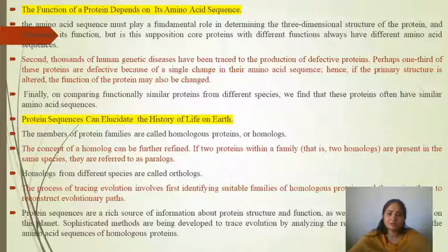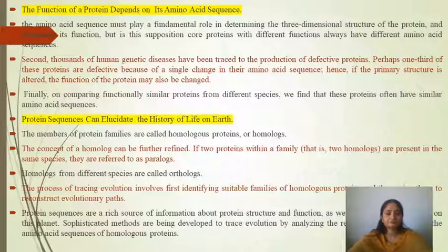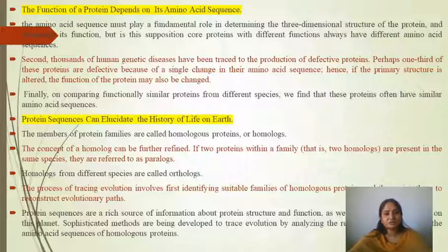Thousands of human genetic diseases have been traced to the production of defective proteins. Perhaps one third of these proteins are defective because of a single change in their amino acid sequence. Hence, if the primary structure is altered, the function of the protein may also be changed. When comparing similar proteins from different species, we find that proteins often have similar amino acid sequences.